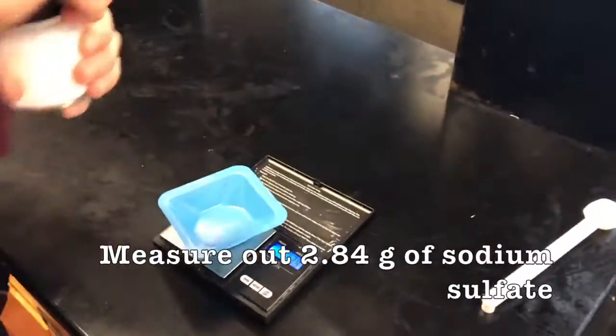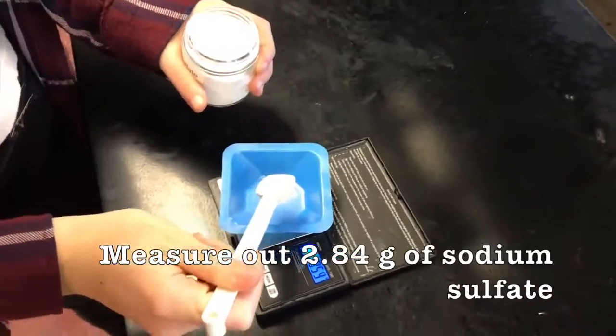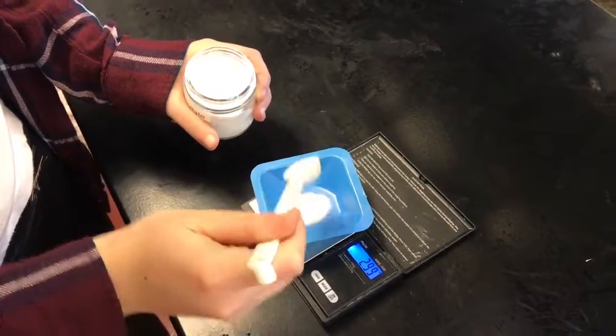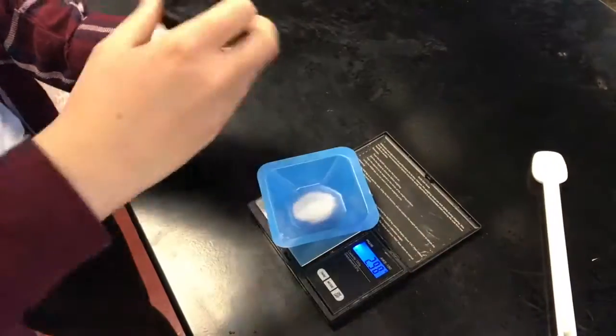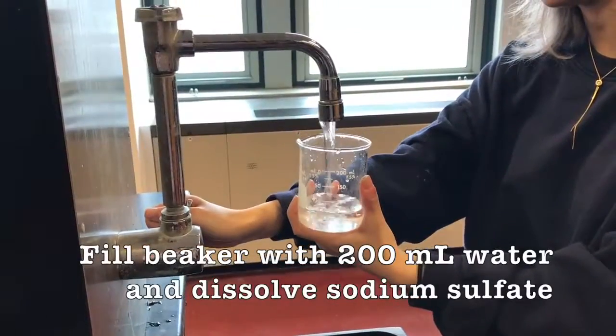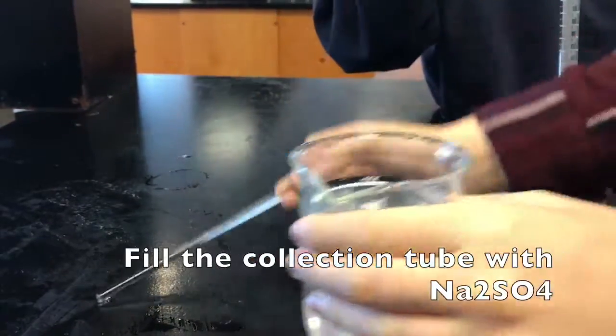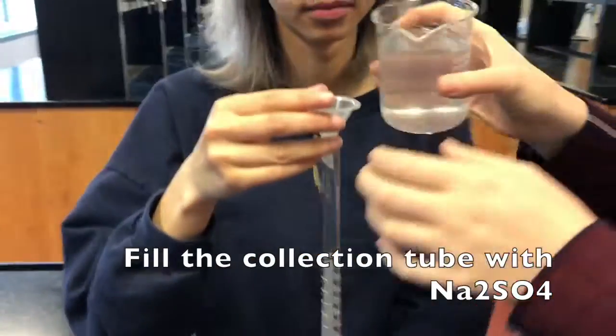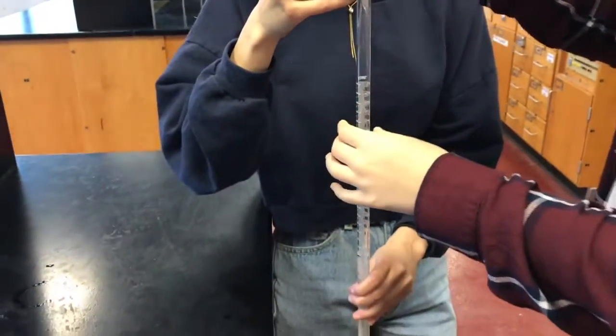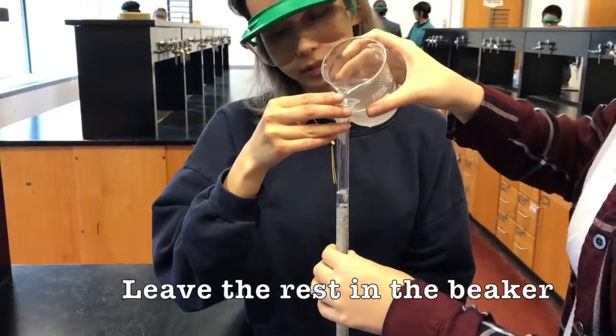Measure out around 2.84 grams of sodium sulfate. Fill the beaker with 200 ml of water and dissolve the sodium sulfate. Fill the collection tube with Na2SO4. Leave the rest in the 250 ml beaker.